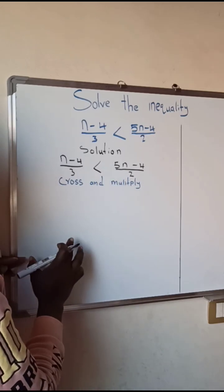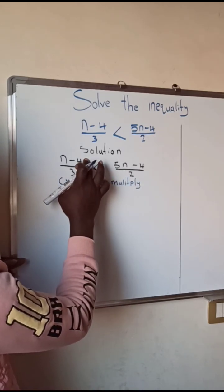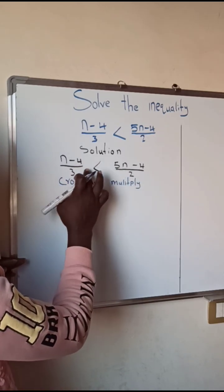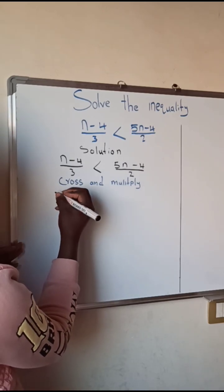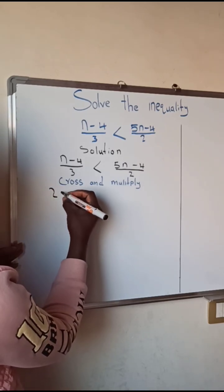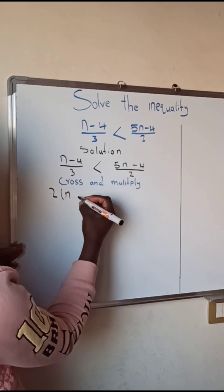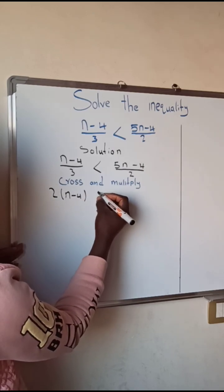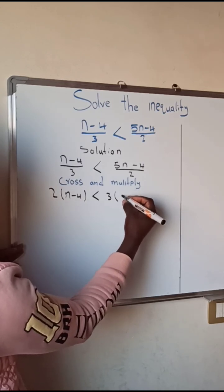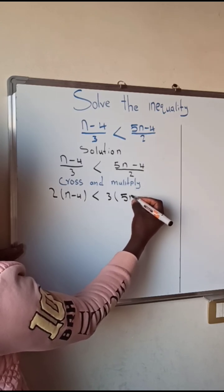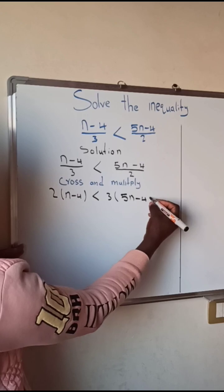So when we cross here, these two will go to this side and the three will go to this side. So here we have 2 in bracket n minus 4 less than 3 in bracket 5n minus 4.